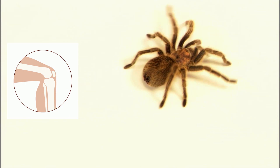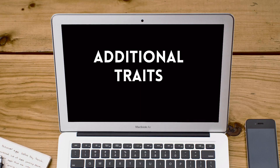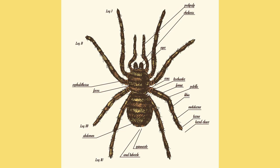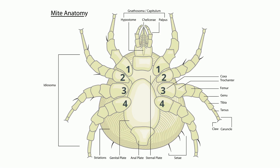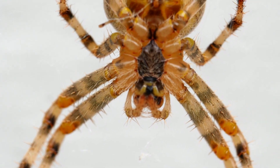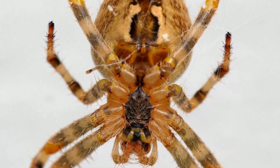In addition to these traits, arachnids also have their own specific traits. Arachnids have two body regions. They have four pairs of legs. Arachnids also have two additional pairs of appendages — the first pair serves in feeding and defense, and another pair that helps the organism feed, move, and reproduce. Arachnids also have no antennae and no wings.